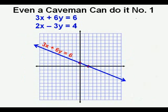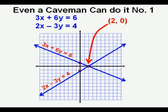Here is 3x + 6y = 6 graphed. And here is 2x - 3y = 4 graphed. The solution appears to be (2, 0).